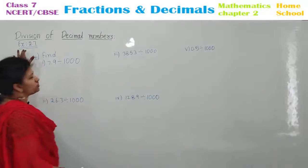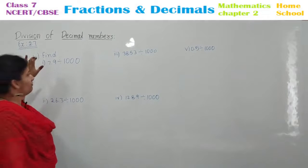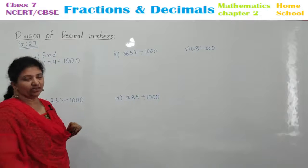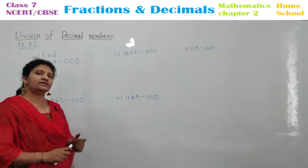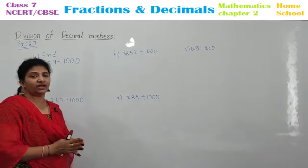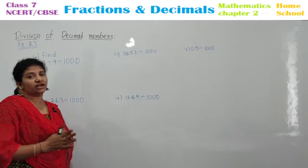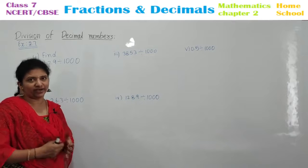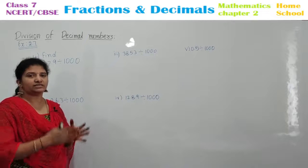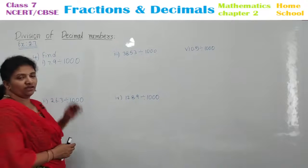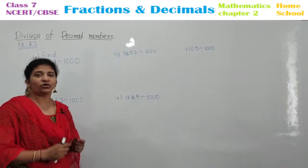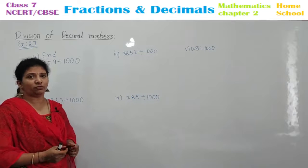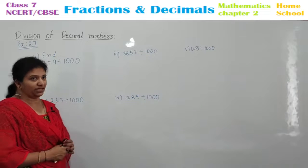We are in exercise 2.7, fourth main — find. In our last session, we have done decimal division with 10 and 100. Similarly, you are going to have this main. That is, we are going to divide the decimal value by 1000.